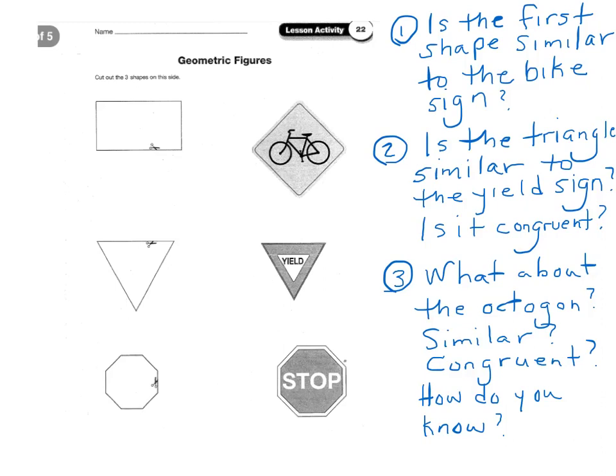So, actually, if you don't have lesson activity 22, you can just look at this. You'll be fine. So, let's take a look. Is the first shape similar to the bike sign? Okay. So, if you were to look at this, you can sit here and go, well, if I were to cut this out and place this over here, first of all, I can just look at it and go, yeah, that's a rectangle. And this is more of a diamond shape, but it's still a square, because if I were to turn it on its side, it would be a square. That's not going to happen. So, the answer is no.